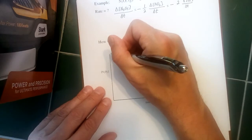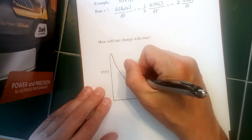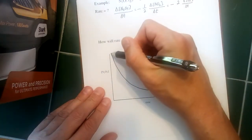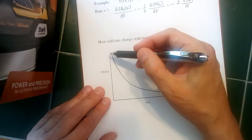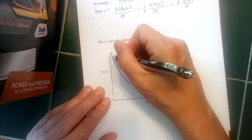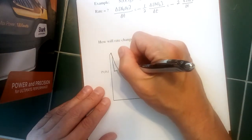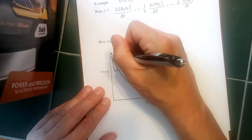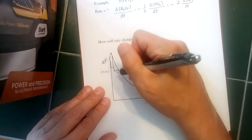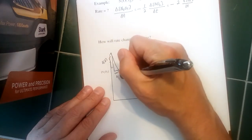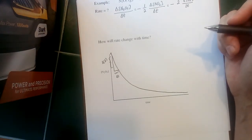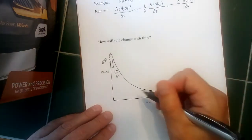The way the rate is going to change with time is actually going to look kind of like this. Early on, we've got a pretty high concentration of our reactant. The rate is going to be fairly high. Over a certain interval here, we see a fairly large change in the concentration of that reactant. And we see a fairly small change in time. So a lot of concentration change over a small amount of time. Pretty high rate early in a reaction.